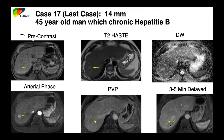Our last case, just to feel good: a 45-year-old man with chronic hepatitis B. There's mild high T2 signal, definite arterial enhancement, washout on the 3-to-5 minute delayed images, and an enhancing capsule — all criteria met for LR5. It's also greater than 10 millimeters. This is your standard HCC.